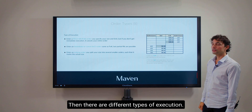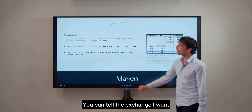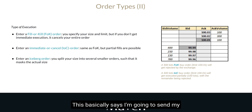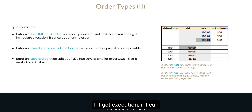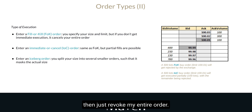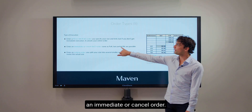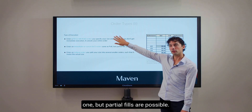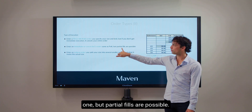There are different types of execution. You can tell the exchange you want to insert a fill-or-kill order. This basically says: I am going to send my order to the exchange, to the order book. If I get execution — if I can trade it — then I will get it. If it's not possible to trade, then just revoke my entire order. On the other hand, there is an immediate-or-cancel order. It's the same as the previous one, but partial fills are possible.